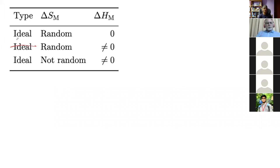In the regular solution model, we assume that the entropy of mixing is determined by a random mixture of atoms, but we admit that the enthalpy of mixing is not zero. The quasichemical model deals with this problem by not assuming that the entropy of mixing is ideal.